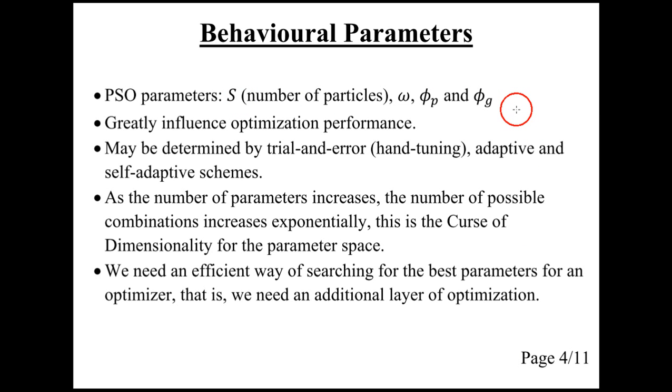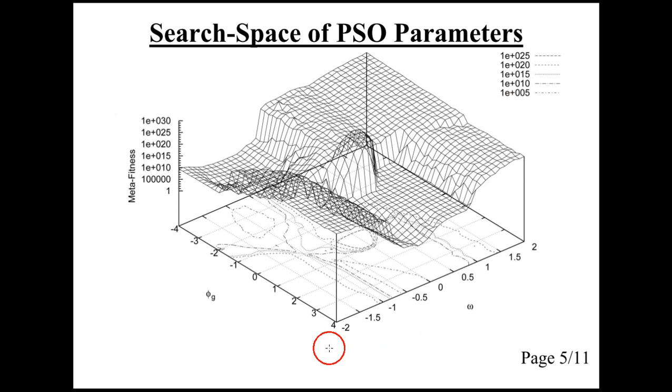And this is essentially another optimization problem, which we call meta-optimization. So this is known as a meta fitness landscape. We have one axis which is a PSO parameter omega. The other axis is a parameter phi g. We cannot depict more than two parameters and the performance on those parameters. But what this graph shows is that we have a landscape, and the goal is to find the lowest point, which is probably here somewhere. And those are the parameters that perform best on the given problems and under the given settings.